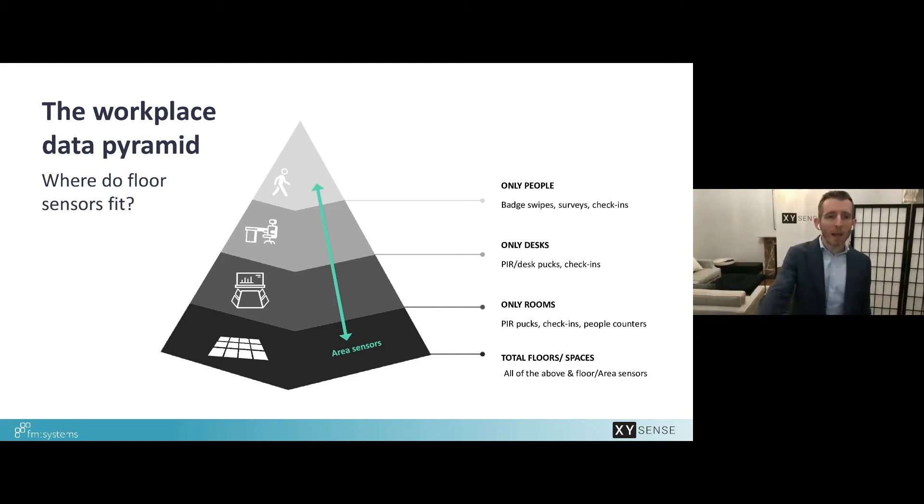Moving down the pyramid desk space utilization which we just saw from Travis most commonly through PIR sensors they give you a binary view of which desks are used. They can be in real time as well but they don't extend potentially to collaboration spaces, breakout spaces, those sorts of spaces.